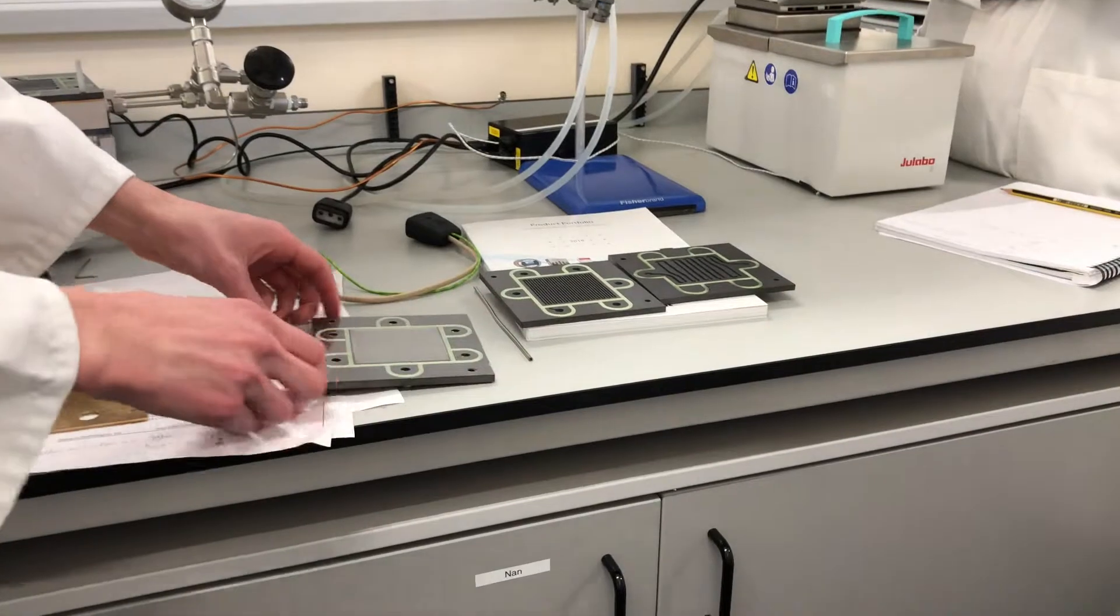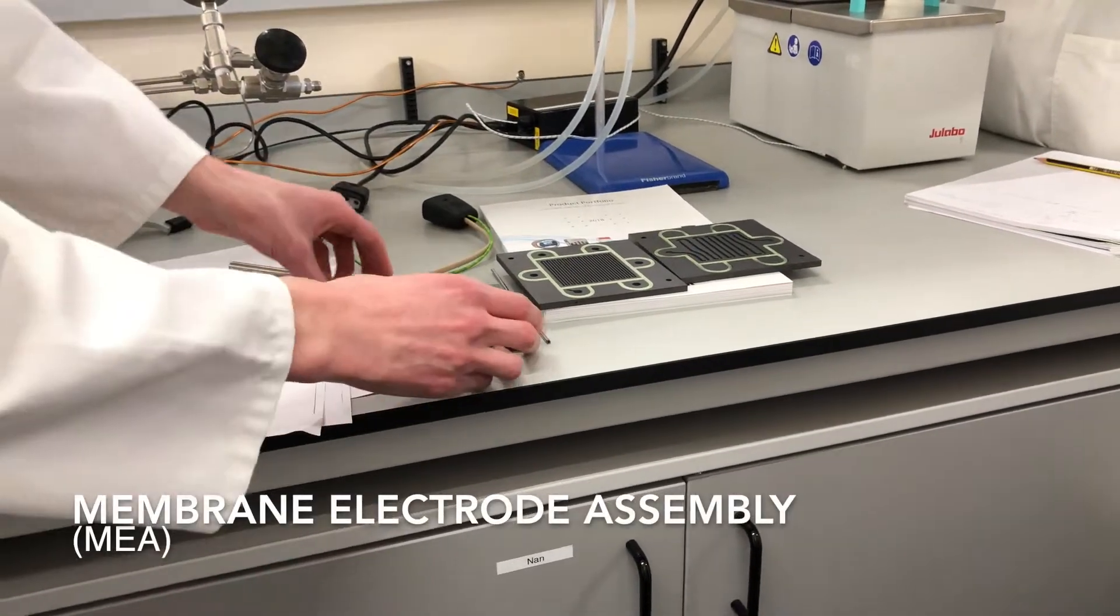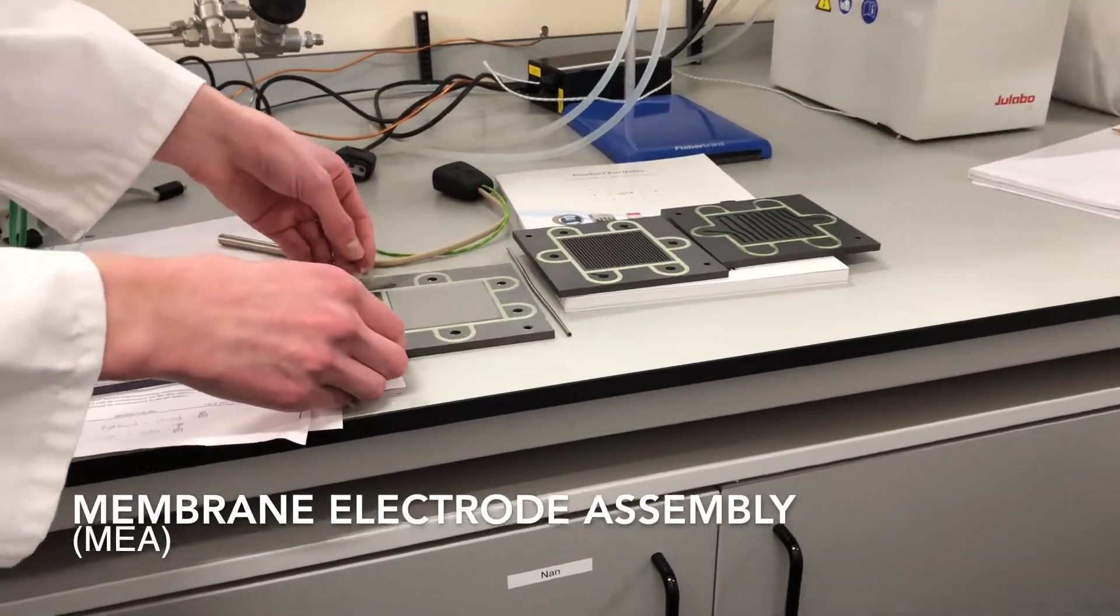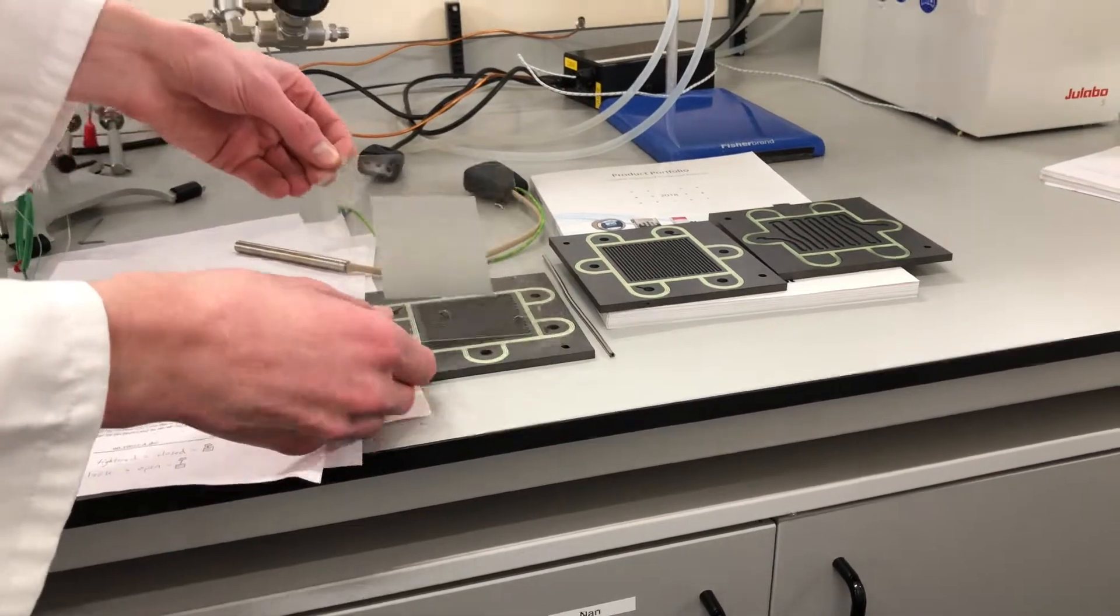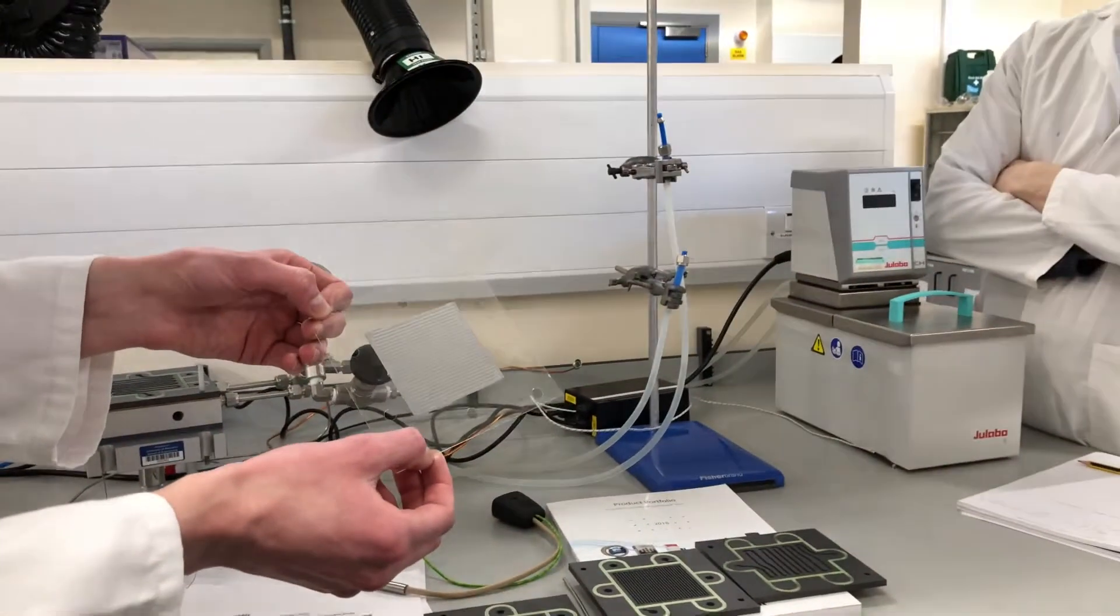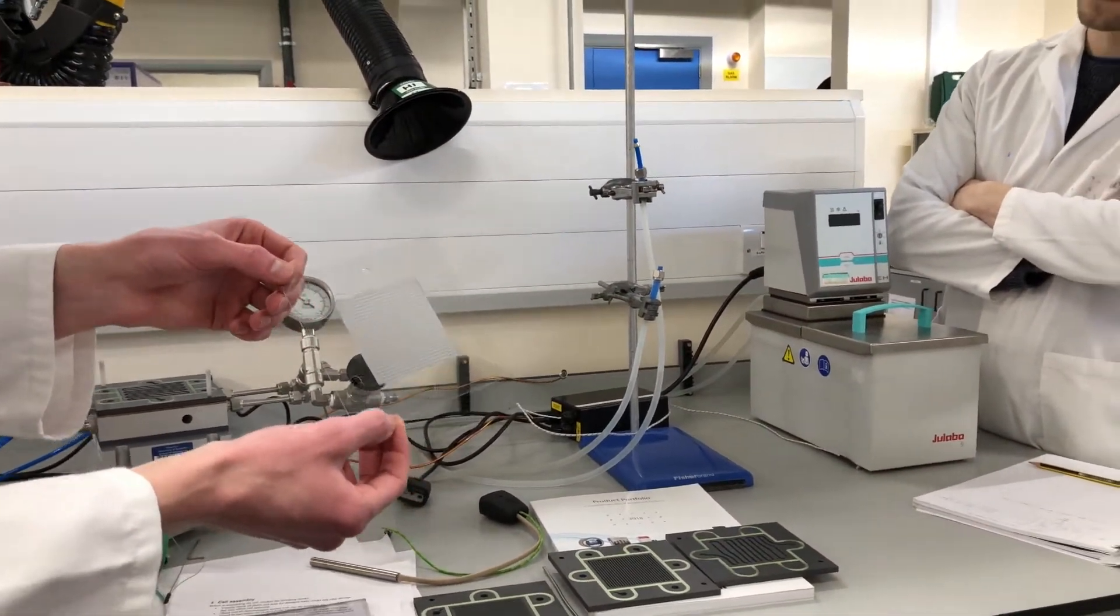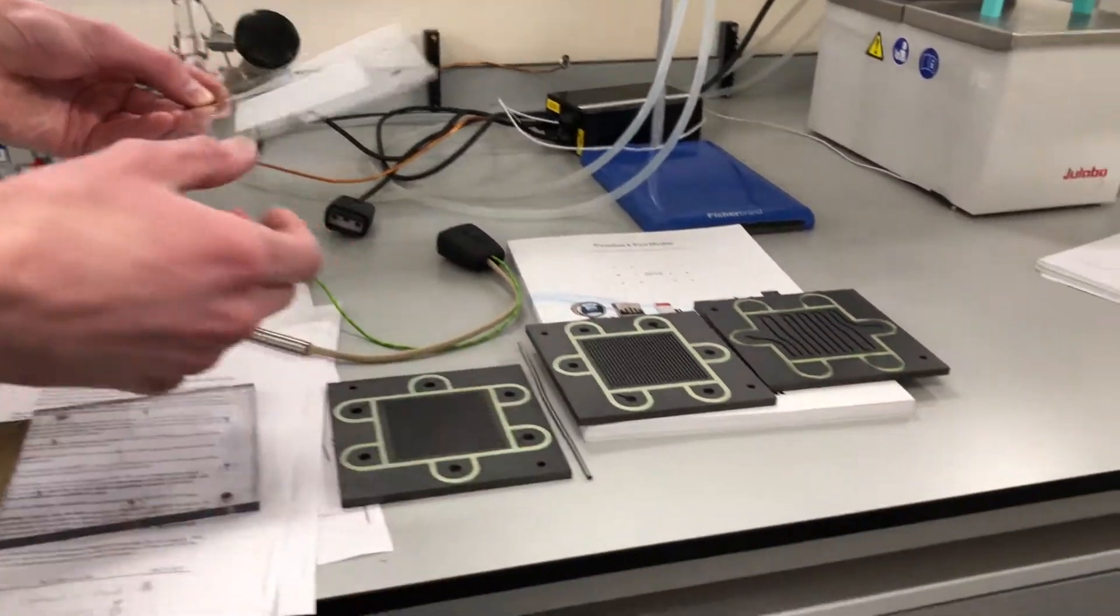And then this here is actually the MEA. So membrane electrode assembly. There in the middle there is your membrane and your catalyst. And again, hydrogen layer on the bottom.